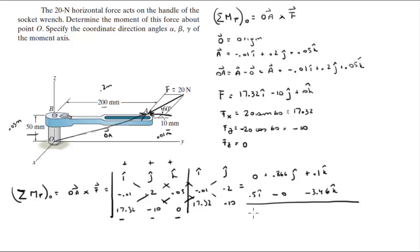So when you add this up, you get 0.5i plus 0.866j plus, I'm sorry, positive 0.1 minus 3.46 is minus 3.36k. So this is the Cartesian vector form of the moment that F creates about O.